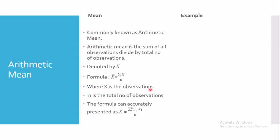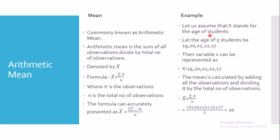The formula for arithmetic mean is x-bar equals the summation of xi divided by n, where n is the total number of observations. For example, let x represent the age of students. If the ages of five students are 19, 20, 22, 22, and 17, then the mean is calculated by adding all observations and dividing by n. Adding them up and dividing by 5 gives a mean of 20.